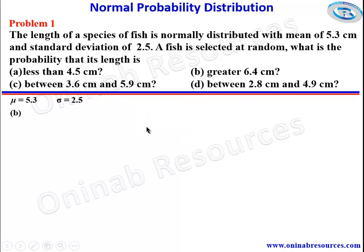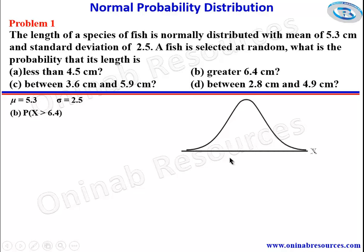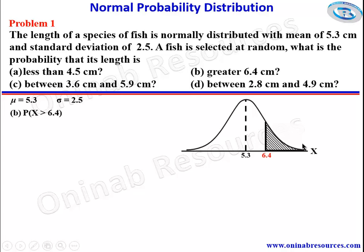We then go for part B. For B, the length is greater than 6.4 centimeters, so we want P(x > 6.4). We sketch this: the mean is here, and 6.4 is to the right of the mean. The area we are looking for is to the right — the shaded portion — which will represent the probability.